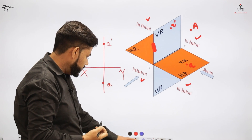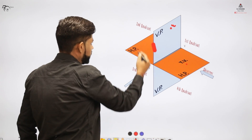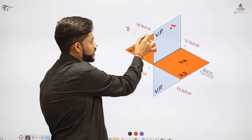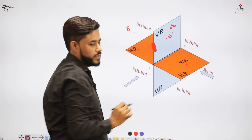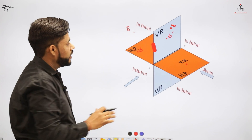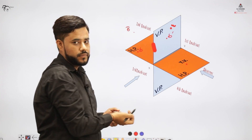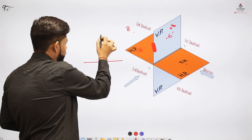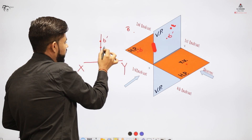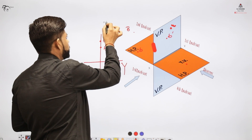Now consider an object 'b' placed in the second quadrant. Throwing light from the front gives front view b-dash on the vertical plane, and from the top gives view 'b' on the horizontal plane. When this horizontal plane is rotated 90 degrees clockwise, b and b-dash may overlap each other. So in the second quadrant, both views end up above the XY line and there is a possibility they overlap.